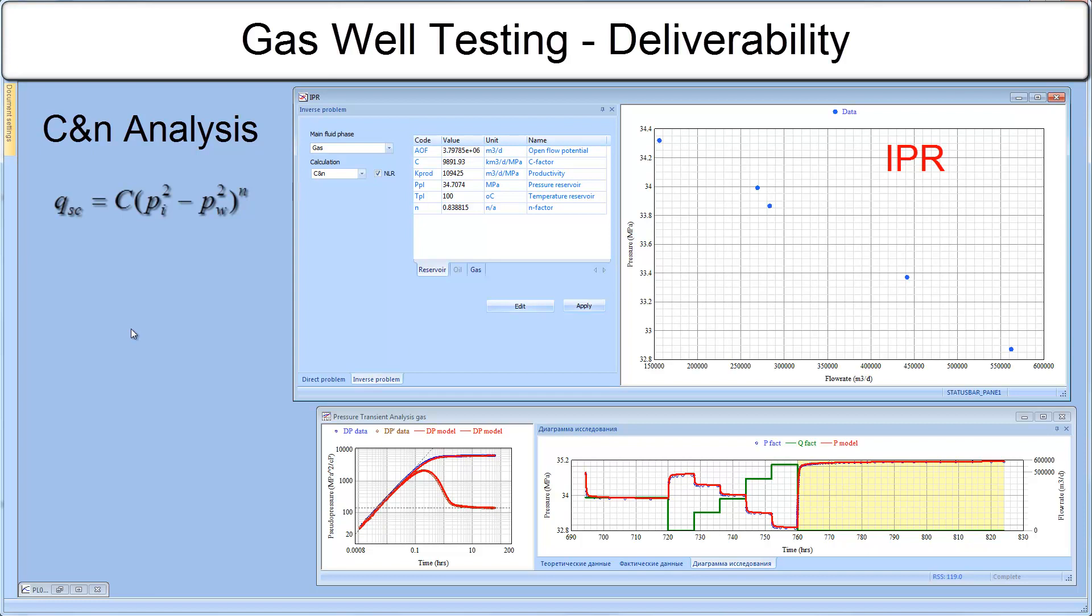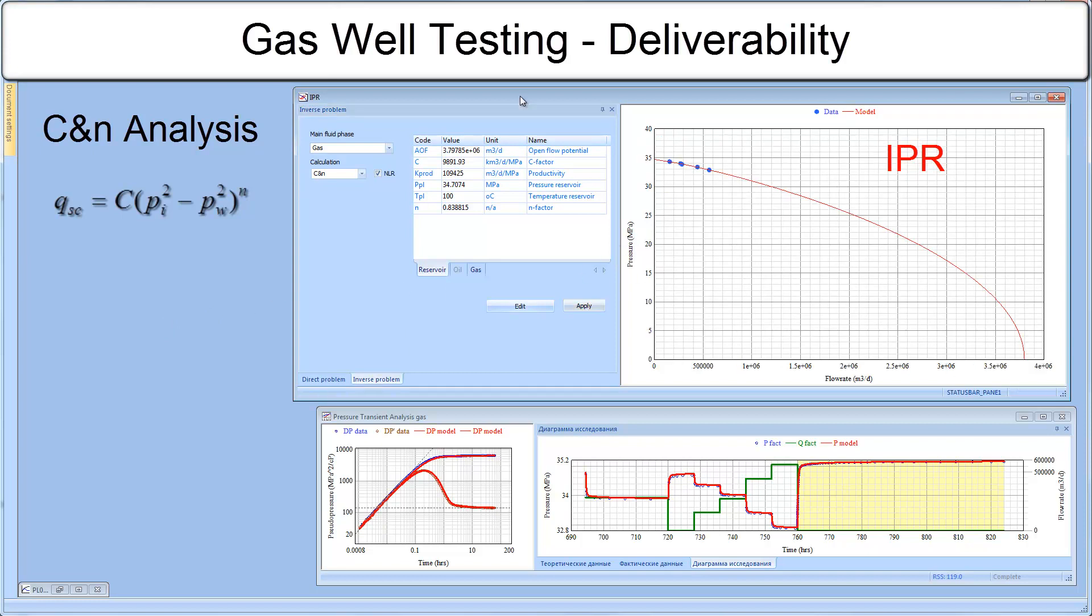This plot, flow versus pressure, is called IPR, inflow performance relationship. Best fit matching resulted in the following model parameters like initial reservoir pressure, PI productivity, absolute open flow potential and CNN coefficients.